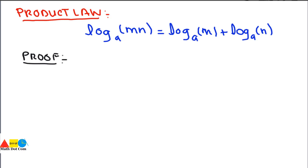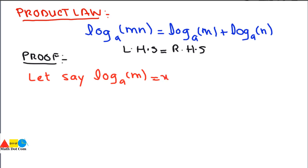For the proof, we need to assume a few things. Let log base a of m equals x and log base a of n equals y. We then convert both of these into exponential form.